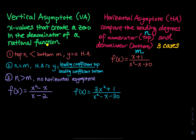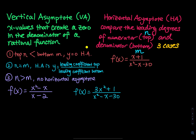For example, think about the reciprocal function 1 over x. For the function 1 over x, when x is equal to zero, 1 over zero is undefined. So therefore, x equals zero is a vertical asymptote.